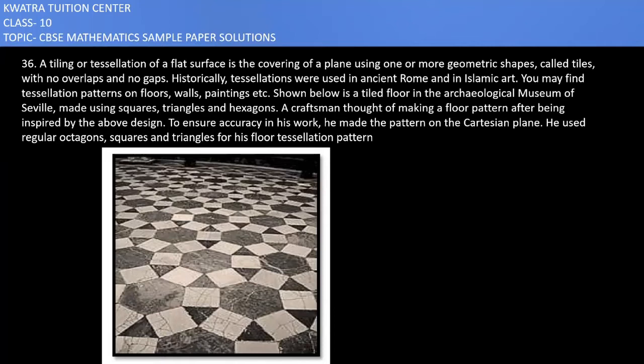In this it says a tiling of a flat surface is the covering of a plane using one or more geometric shapes called tiles. Tiles are covered with no overlaps and no gaps. Historically, tessellations were used in Asian rooms and Islamic art. You may find tessellation patterns on floors, walls, paintings, etc.